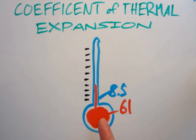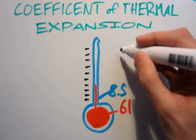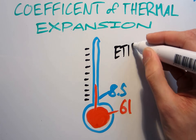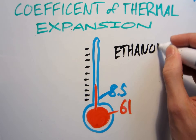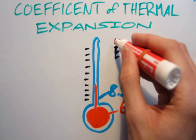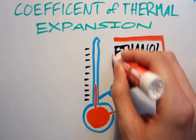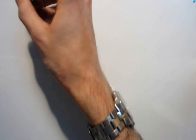Nowadays we avoid mercury because of its inconvenient toxicity, and the stuff in thermometers is usually ethanol, which has a coefficient of 250 and is traditionally dyed red.